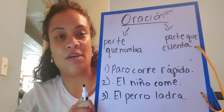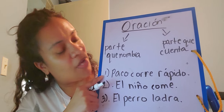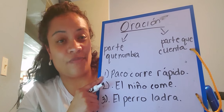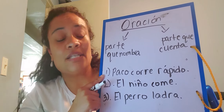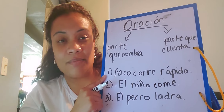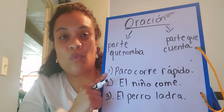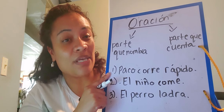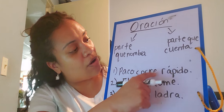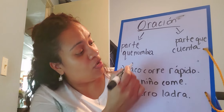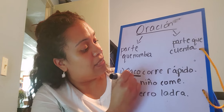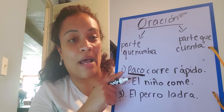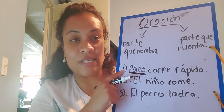So I have three sentences here that we're just going to look at. Number one, número uno: Paco corre rápido. Paco runs fast. Today we're going to look for the part that names — the part that tells us who or what the sentence is about. Vamos a mirar hoy a ver la parte que nombra, de qué o quién están hablando. Paco corre rápido. La oración se trata de Paco. The sentence is about what Paco is doing, so Paco es la parte que nombra. Paco is the part that names.